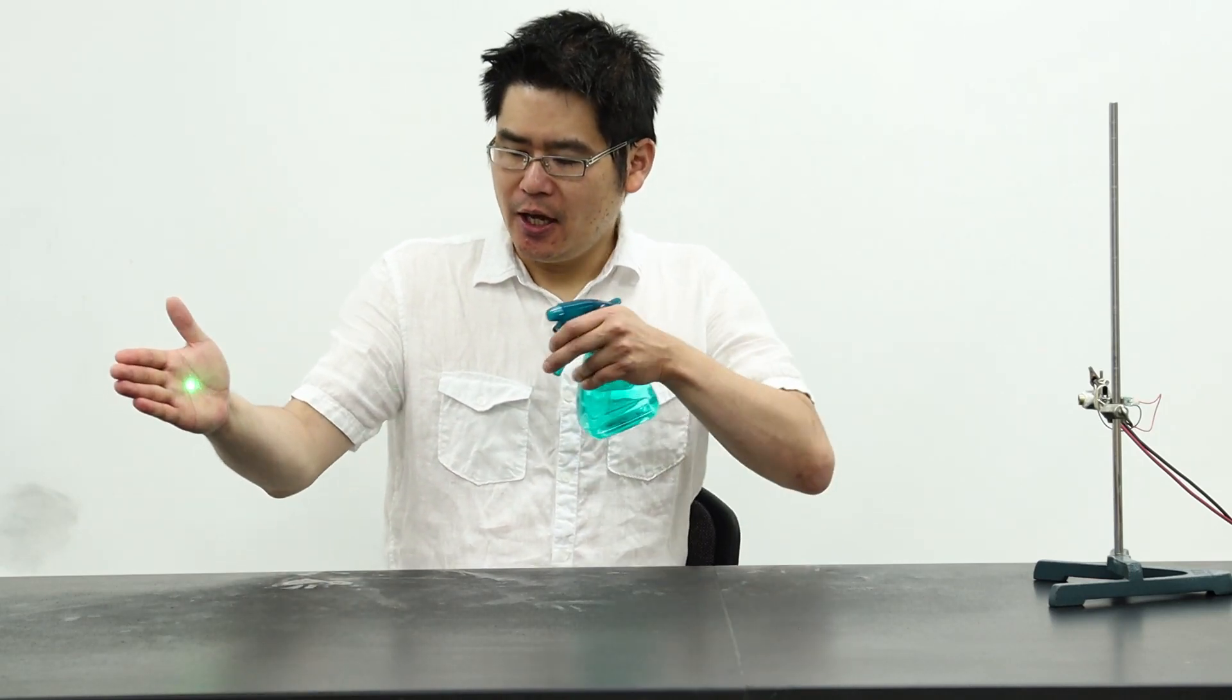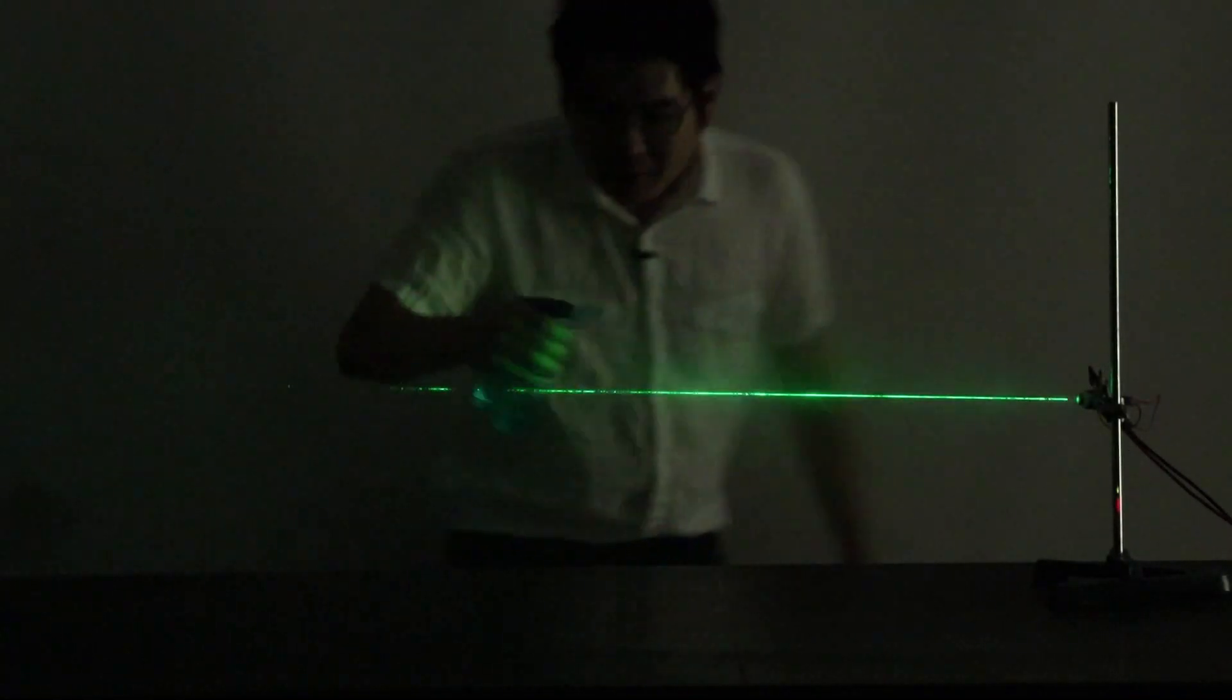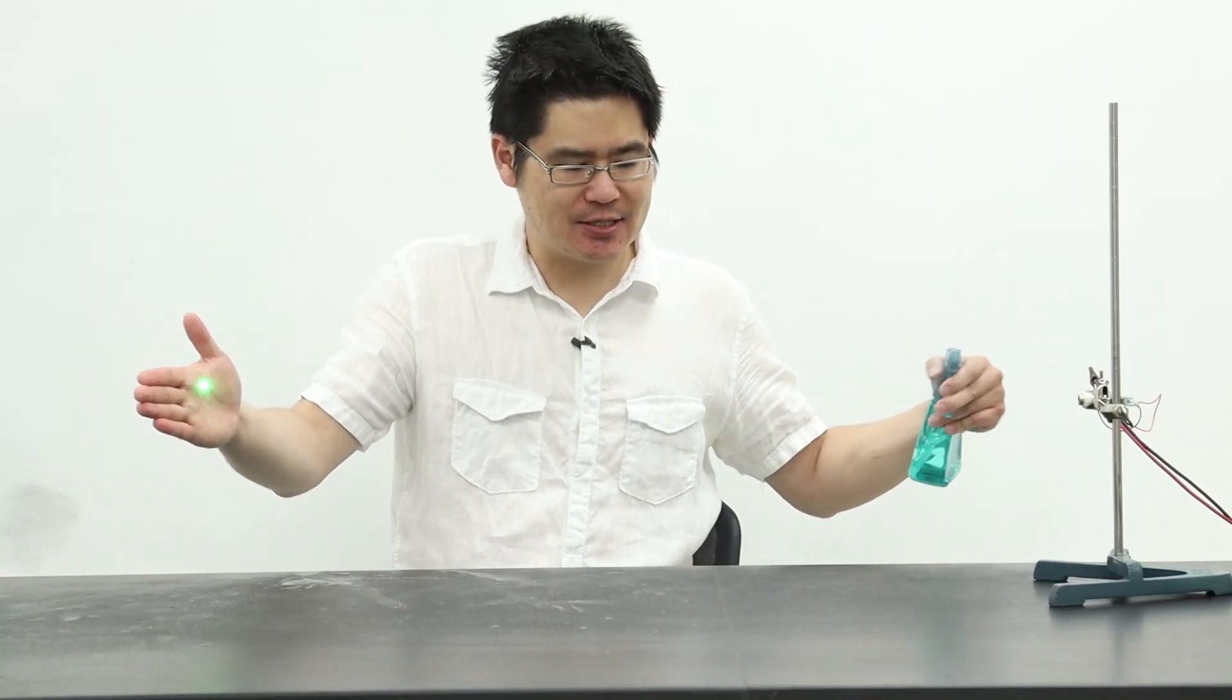Light travels in a straight line. Take a laser pointer and spray some particles in front of it and whoa! Rectilinear propagation! You can clearly see the straight path that light takes.